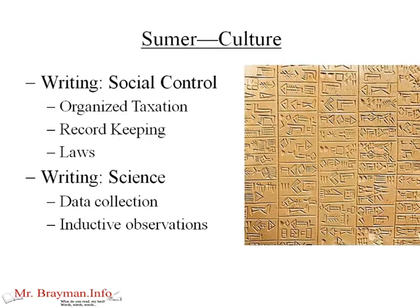They also developed writing, and we want to think about what writing can do. One of the big things for Sumer was using writing as a tool for social control — they were able to have organized taxation and know who'd paid their taxes and who hadn't, very organized record keeping in terms of who owns what and who has sold what, and also a system of laws. Writing was also very important for science, since you need to collect data in order to make inductive observations and form hypotheses.